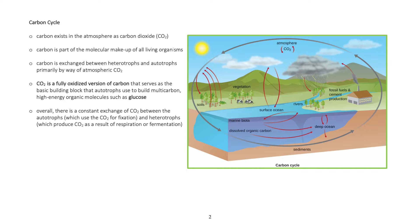Overall, there is a constant exchange of carbon dioxide between the autotrophs, which use the carbon dioxide for fixation, and heterotrophs, which produce carbon dioxide as a result of respiration or fermentation.